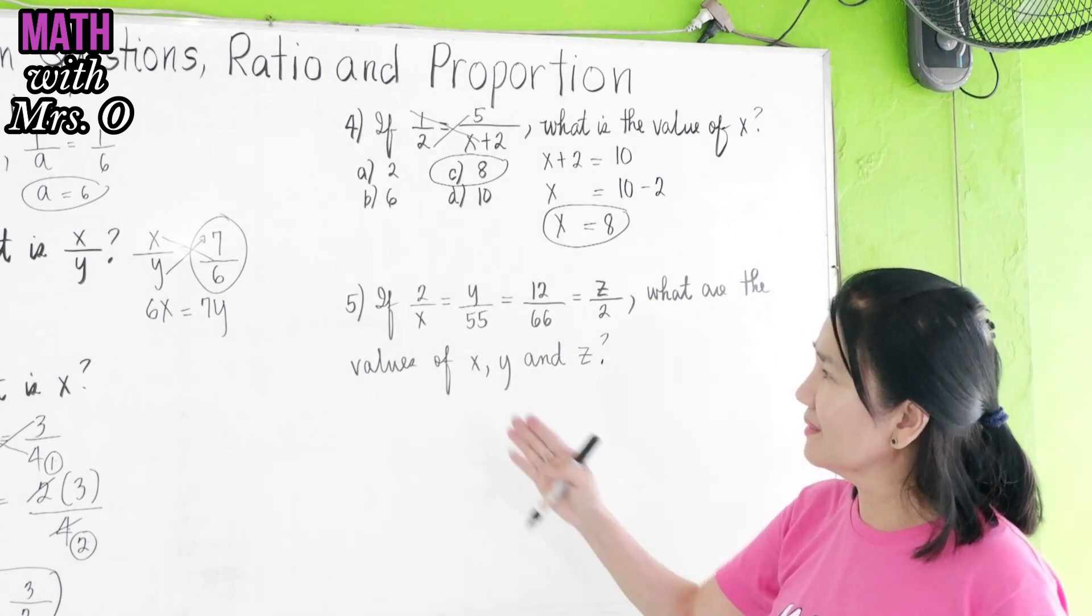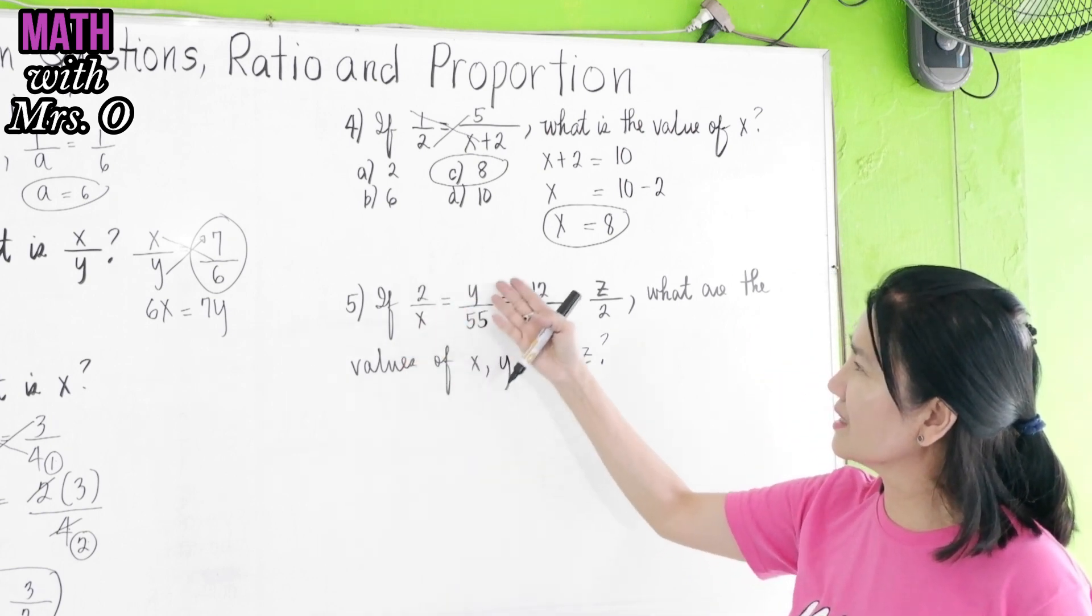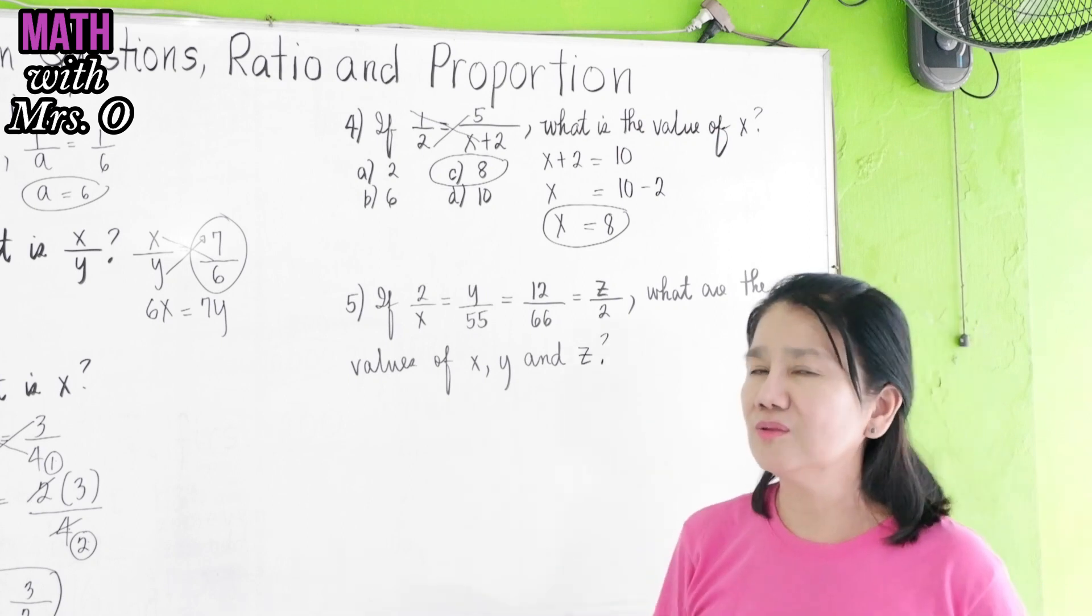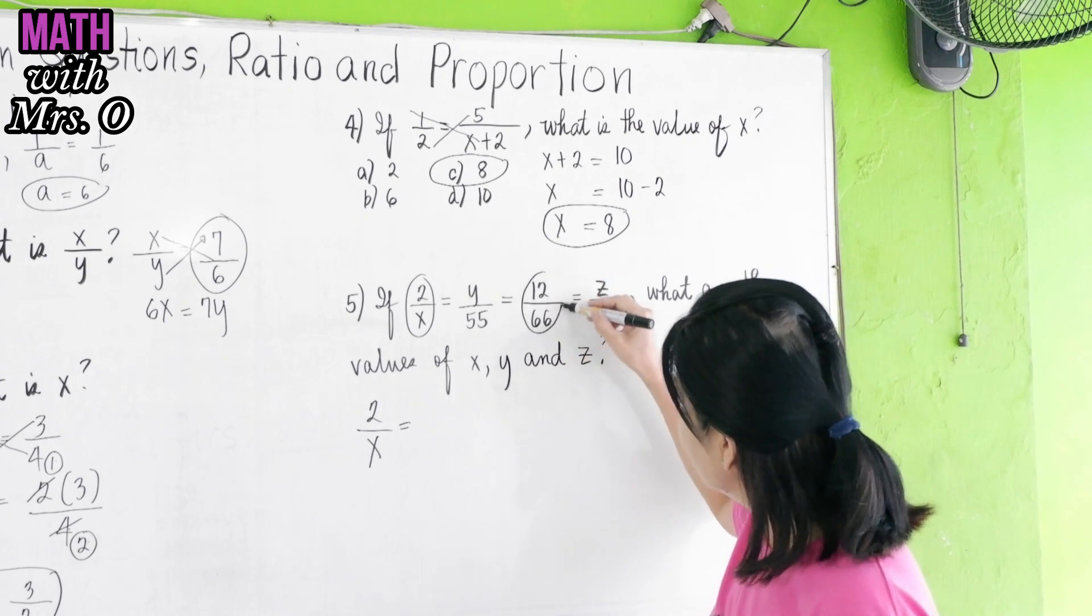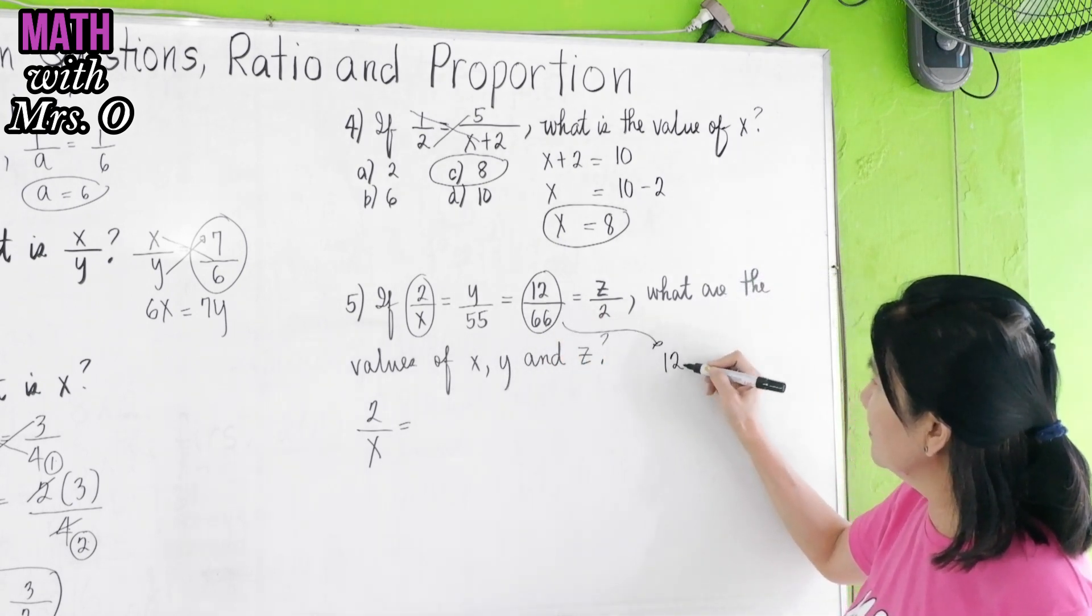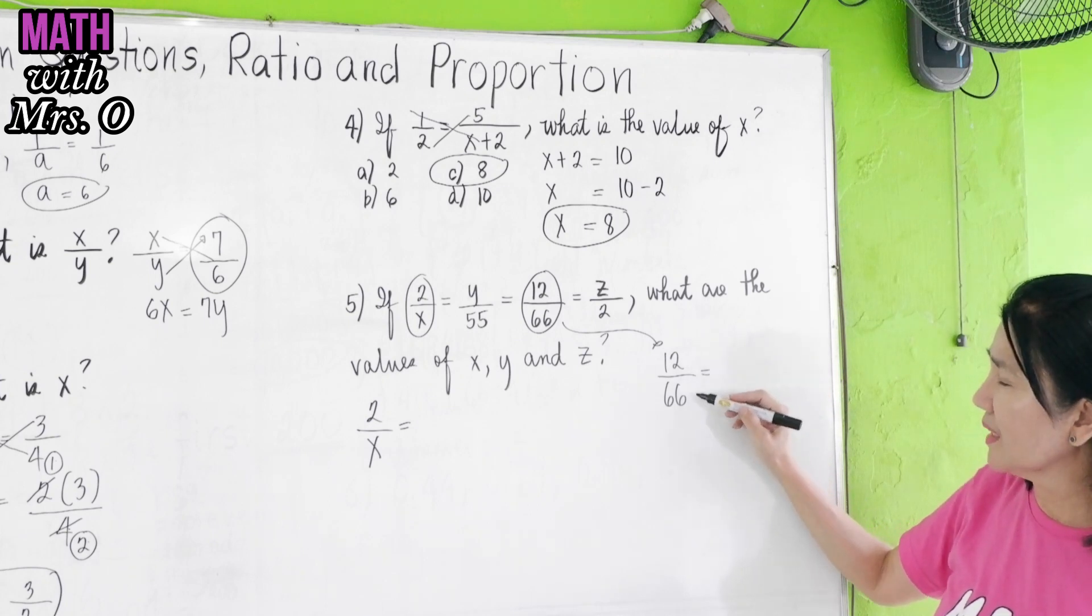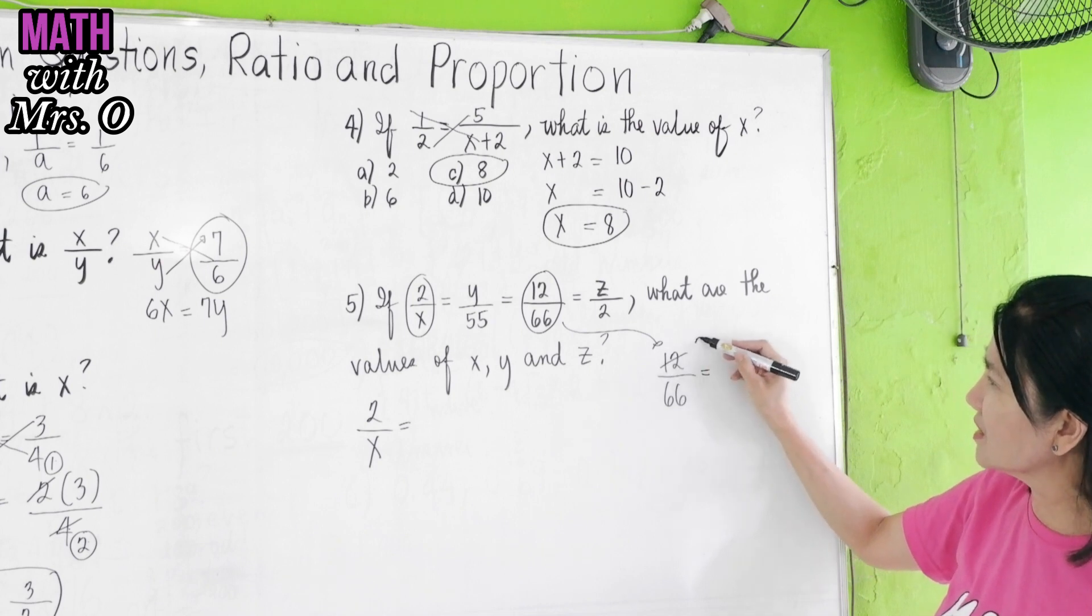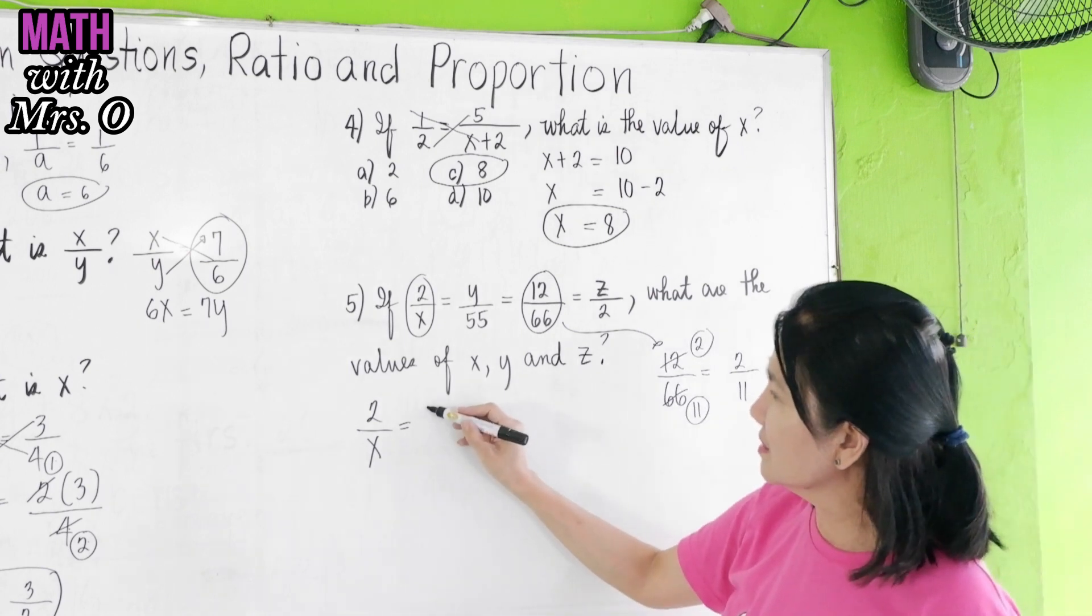Sometimes, in an entrance exam, they give you three variables x, y, and z. What will you do? So, if 2 over x equals y over 55 equals 12 over 66 equals z over 2, what are the values of x, y, and z? Now, take one ratio here, 2 over x, to solve for x, equate it to a ratio with no variable, but you have to simplify this. Let us simplify here. Take note that 12 and 66 are both divisible by 6. 12 divided by 6 is 2, 66 divided by 6 is 11. So, this is 2 over 11. Equated with this, 2 over 11.